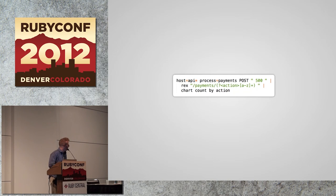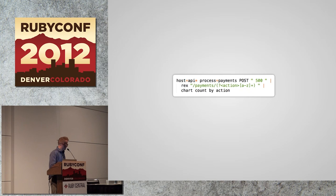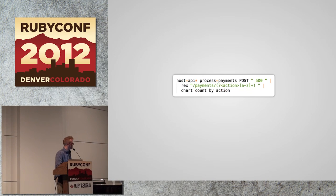Here's an example of a Splunk query I use when I'm on call. For all our API hosts, any process that involves payments, it tells me which ones are returning 500s. At the very end we have 'count by action.' Splunk can parse your logs and detect the controller and action — it knows Rails by default, but if you have a custom log file you'll need to teach it. This shows you a graph of all the actions that are failing, so you can gear your attention toward those specific controller actions causing the most trouble.